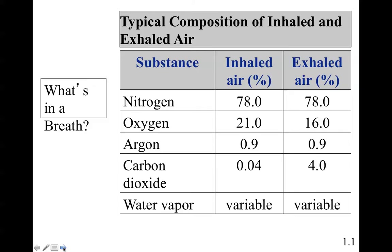What's in the breath? Typical composition of inhaled and exhaled air includes nitrogen, oxygen, argon, carbon dioxide, and water vapor. The inhaled air is 78% nitrogen, 21% oxygen, 0.9% inert argon, and only about 0.04% carbon dioxide; water vapor can vary. In exhaled air, nitrogen remains the same, but oxygen depletion occurs — you're down to 16%. Argon stays at 0.9%, and carbon dioxide rises to 4.0% due to the metabolism of sugars and lipids, forming energy, water vapor, and exhaled carbon dioxide.